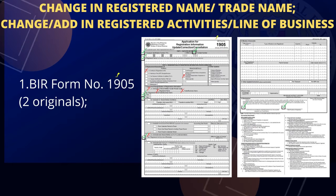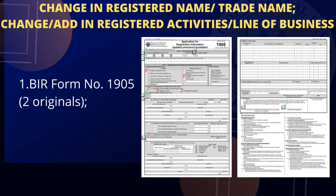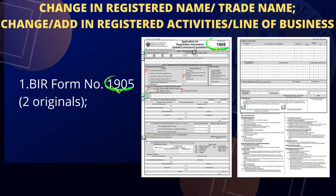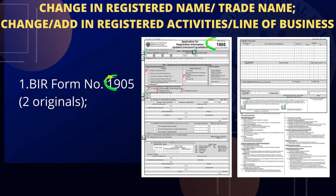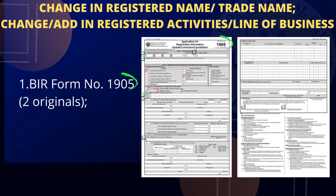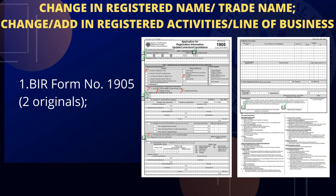Change in registered name or trade name, or change or add in registered activities or line of business: one, BIR Form Number 1905, two originals. The mandatory fields are the following: taxpayer identification number, contact number, registered name, replacement or cancellation of forms — certificate of registration, correction or change or update of registration information, change in registered name or trade name, new registered name or trade or business name, change or add registered activity or line of business, signature over printed name on taxpayer or authorized representative, tax agent, title or position of signatory.